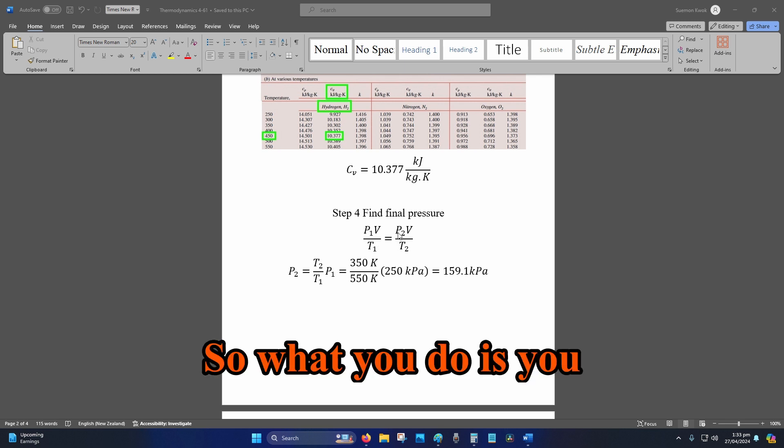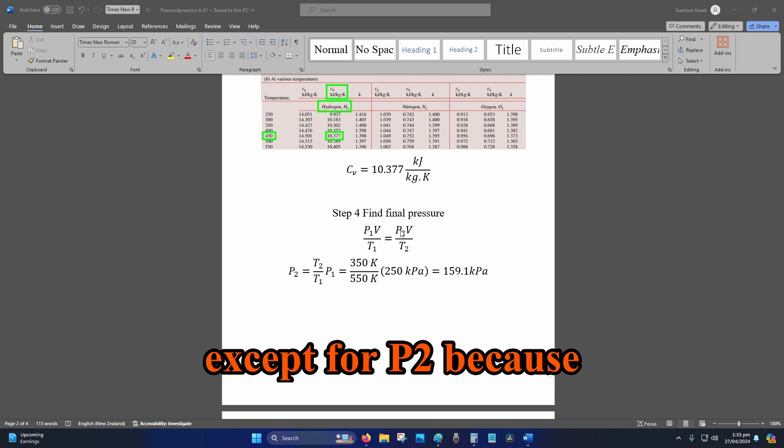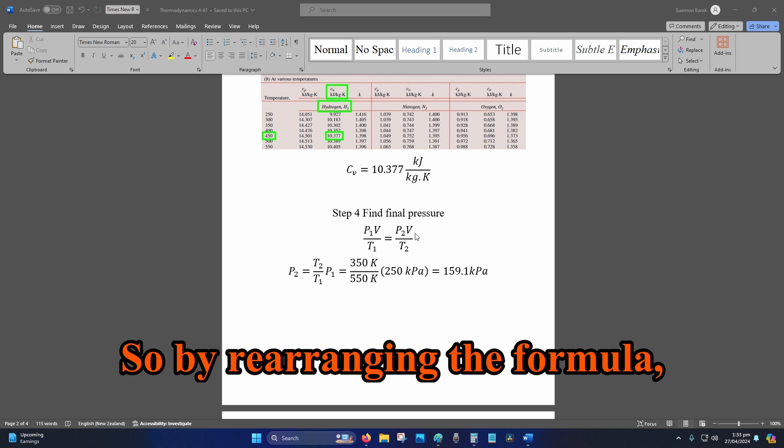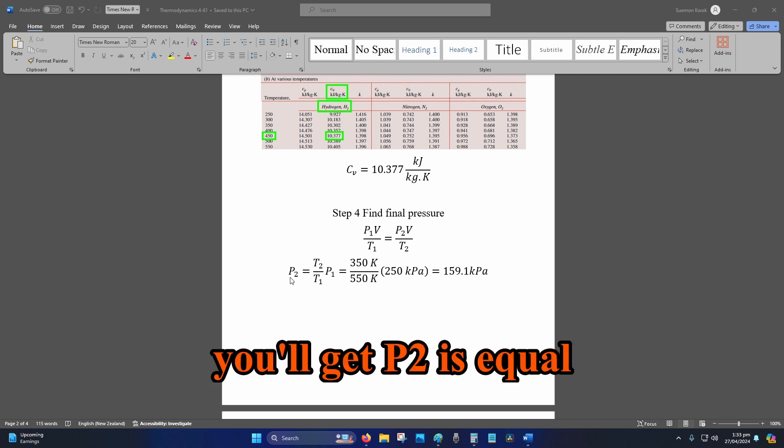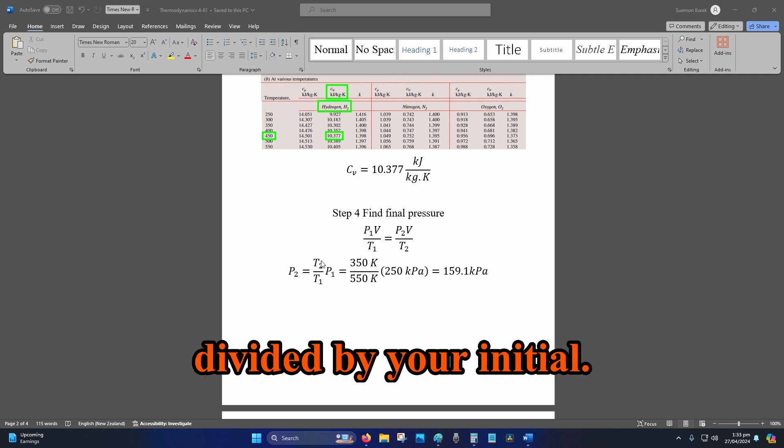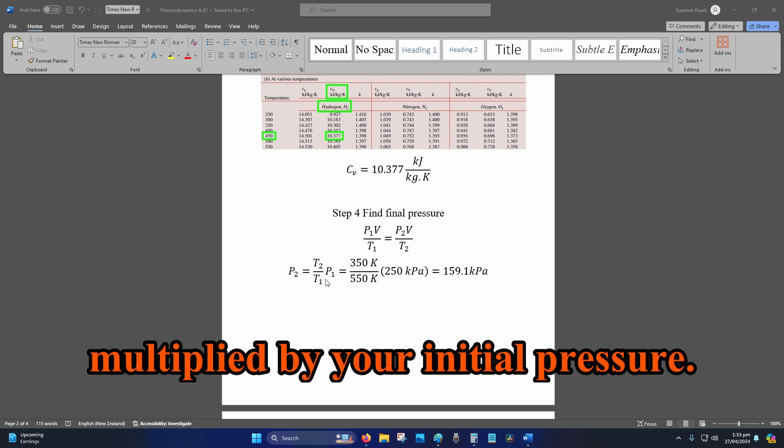What you do is you bring everything to one side except for P2 because that's the final pressure. By rearranging the formula, you'll get P2 is equal to your temperature ratio, which is your final divided by your initial. T2 divided by T1 multiplied by your initial pressure.